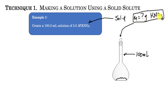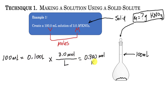To figure out the mass of potassium nitrate, I use the volume and molarity of the solution. From those two values I can determine the moles of potassium nitrate needed. Molarity is moles per liter of solution, so using volume and molarity I calculate 0.03 moles of potassium nitrate required.